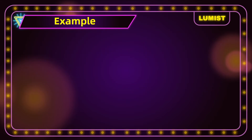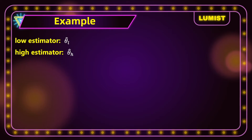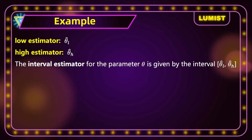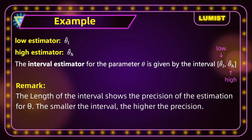Before we continue, let me introduce some notations of interval estimation. The low estimator is denoted by theta-hat with subscript L, and the high estimator is denoted by theta-hat with subscript H. The interval estimator for the parameter theta is given by the interval with theta-hat-L as the lower bound and theta-hat-H as the upper bound. Notice that the length of the interval shows the precision of the estimation — the smaller the interval, the higher the precision.